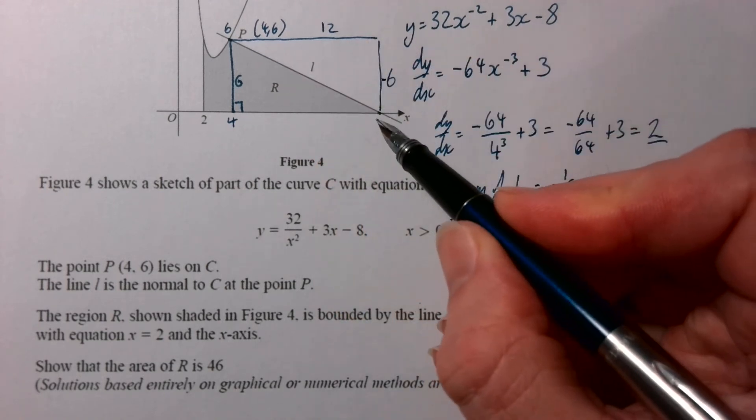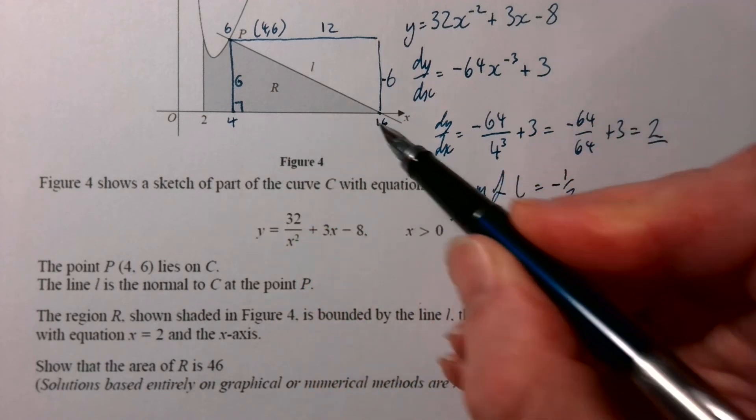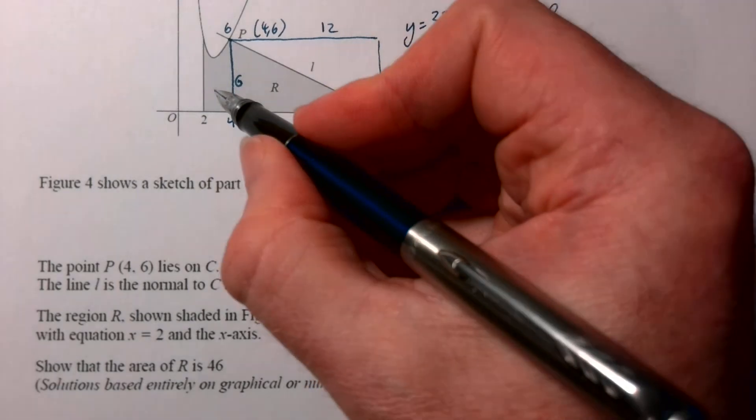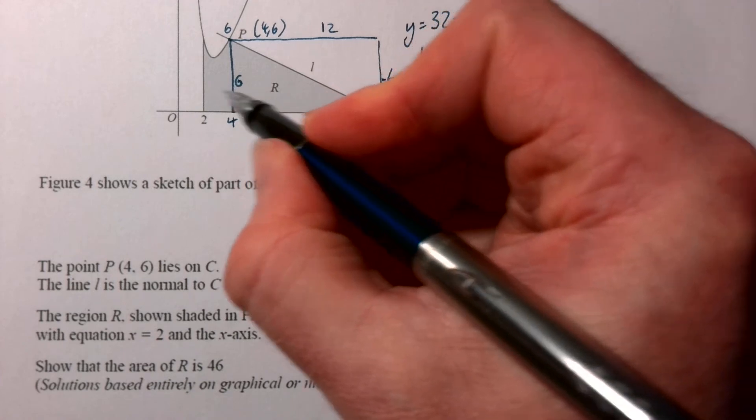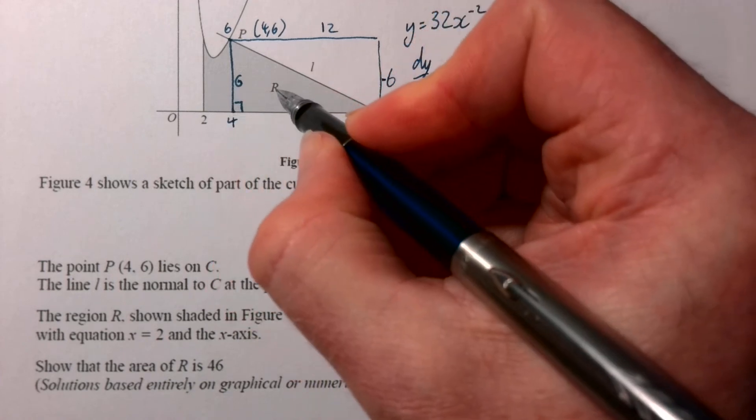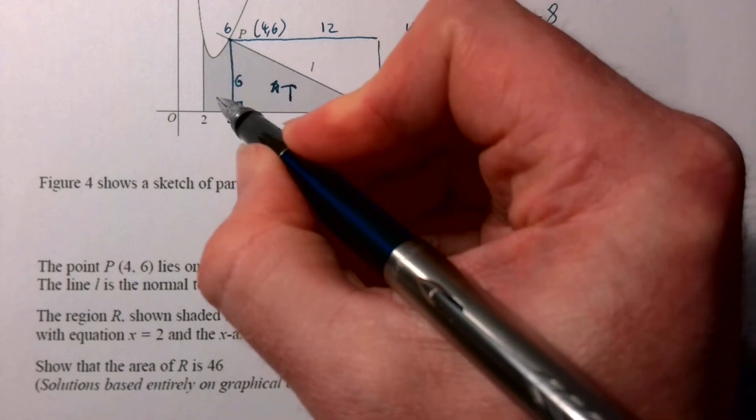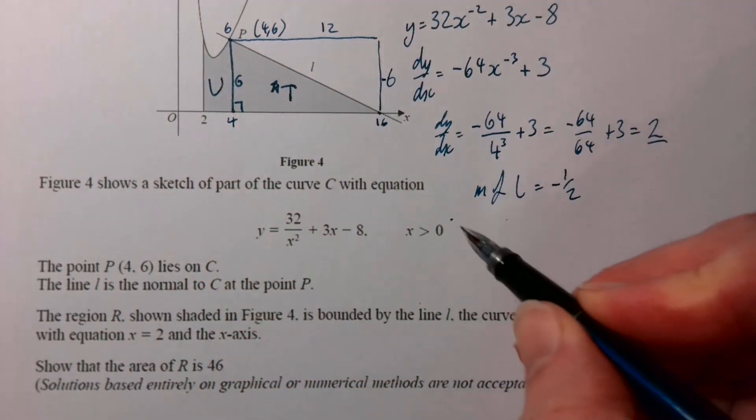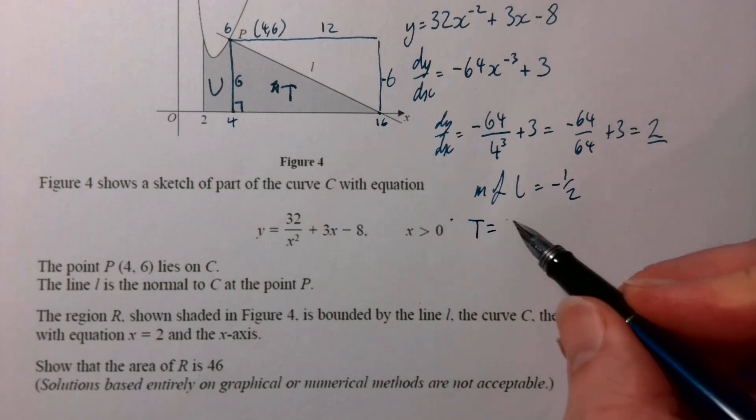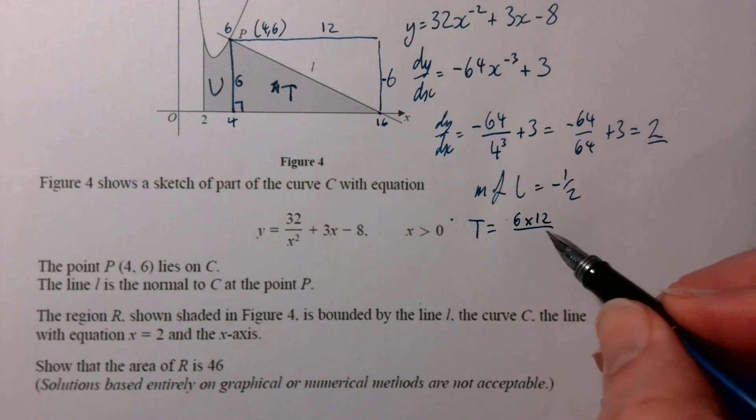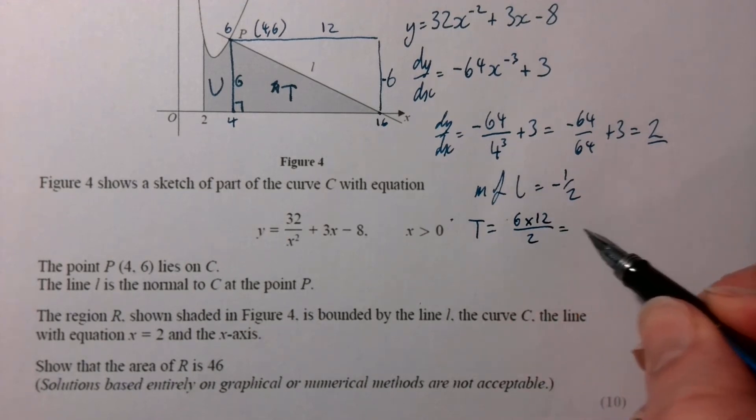So it's gone along 12, so that'll be 16 there, but the important thing is that length there is 16. So if I call this bit here - they called the whole thing R, so I'm going to call that T for triangle, and I'm just going to call that bit there U. So then T is going to be base times height over 2, which is 36.